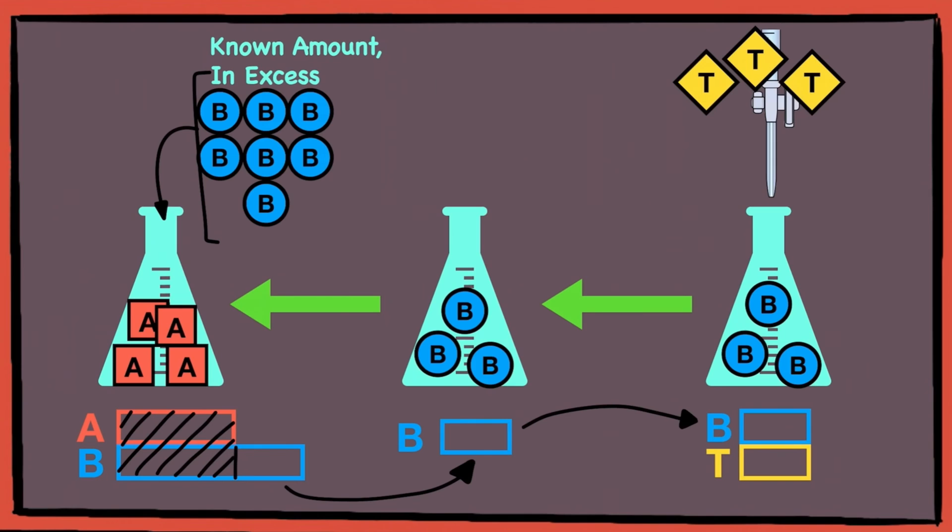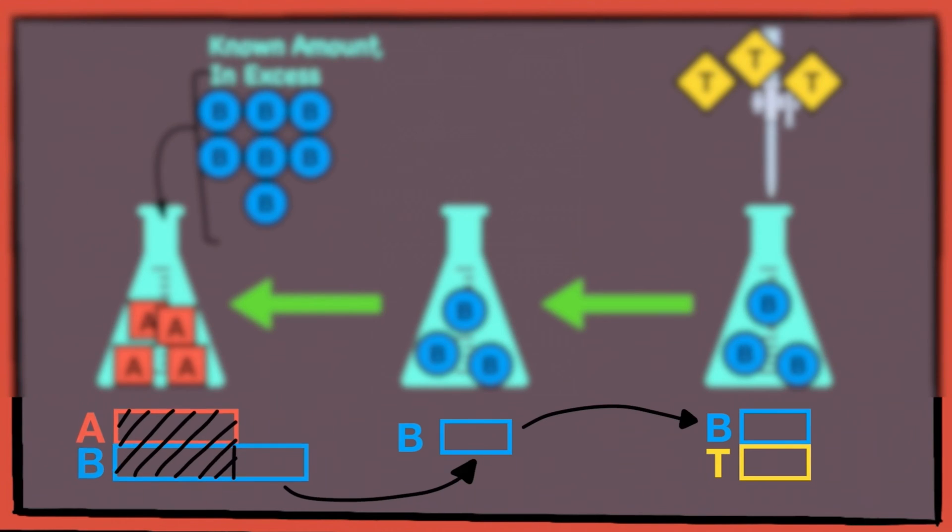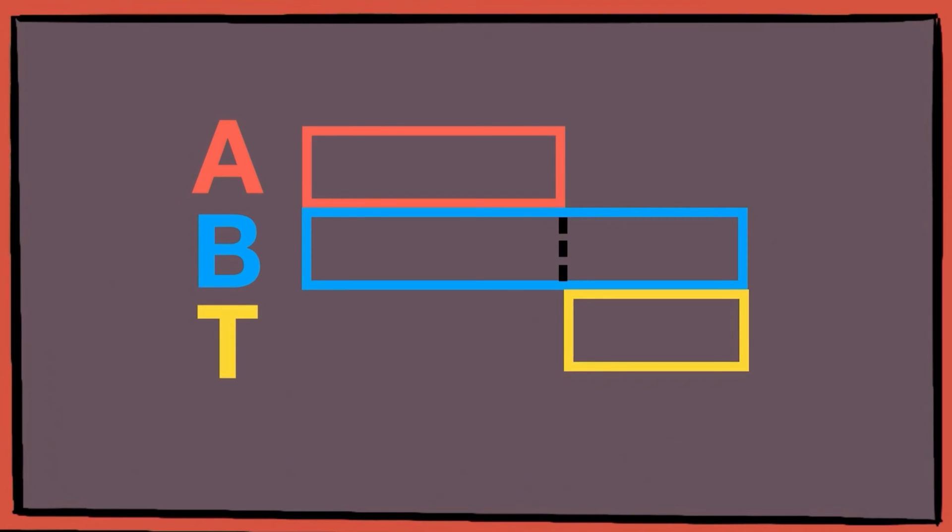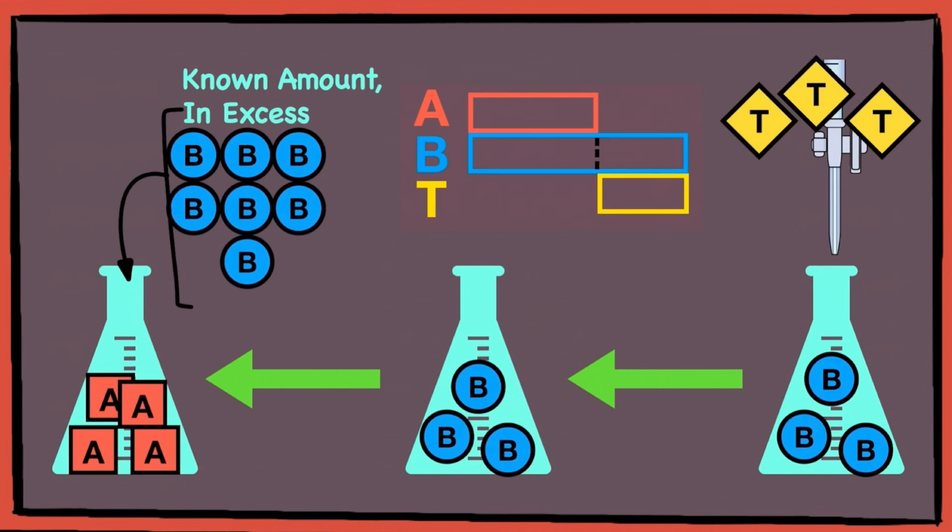So if you were to combine all the boxes below the diagrams into one, it will look something like this. Before we work backwards to find A, we need to first recognize that there are two reactions taking place. The first one being B reacting with A and the second one is the titration between B and T.